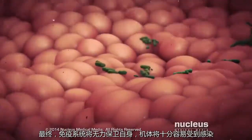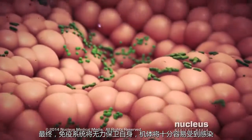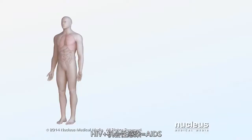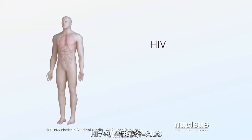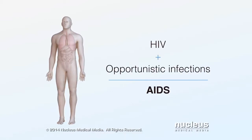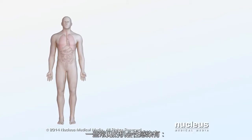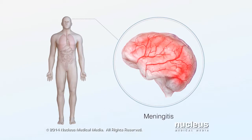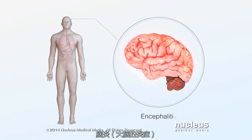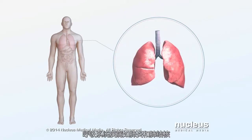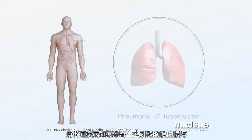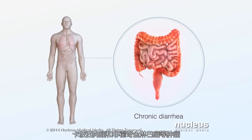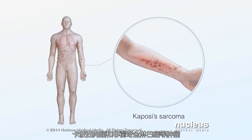As a result, other types of infections are able to take advantage of your body's inability to defend itself. These are called opportunistic infections. If you have an HIV infection and one or more opportunistic infections, you have AIDS. Common AIDS-related opportunistic infections include meningitis, encephalitis, respiratory illnesses such as pneumonia and tuberculosis, intestinal illnesses such as chronic diarrhea caused by infectious parasites, and cancers such as Kaposi's sarcoma and non-Hodgkin lymphoma.